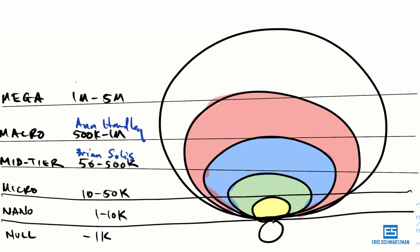Top of the ladder is mega, and these are celebrities with 1 to 5 million followers, like Gary Vaynerchuk.